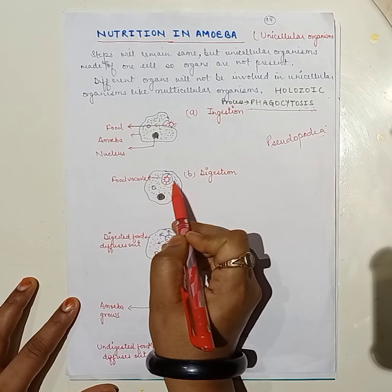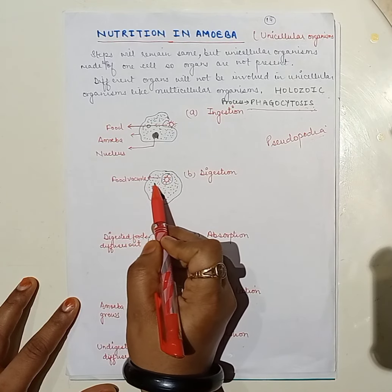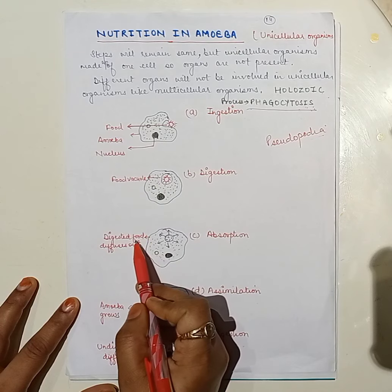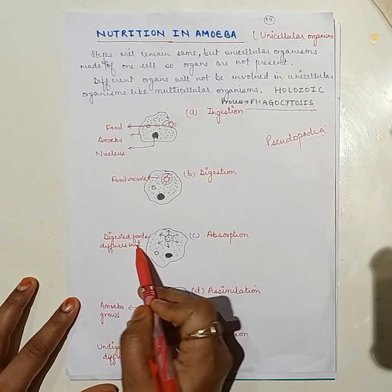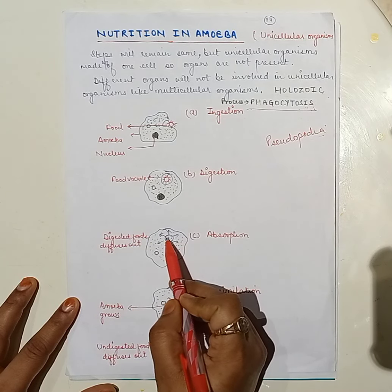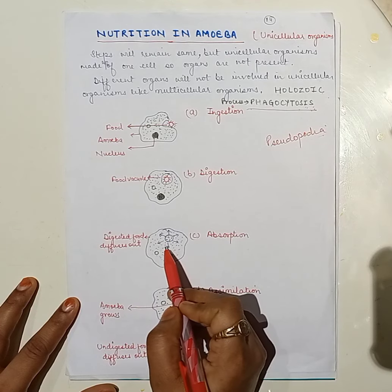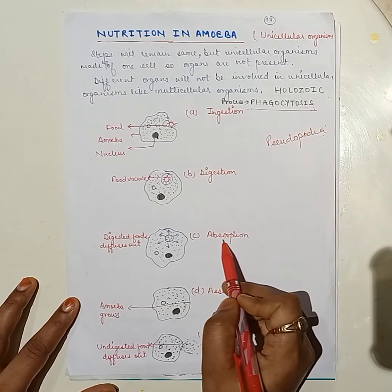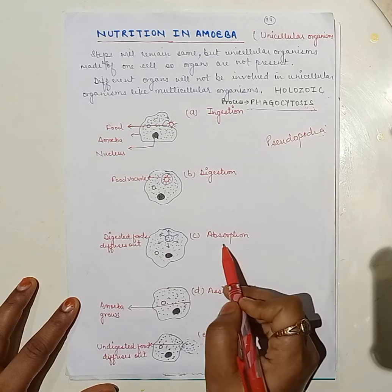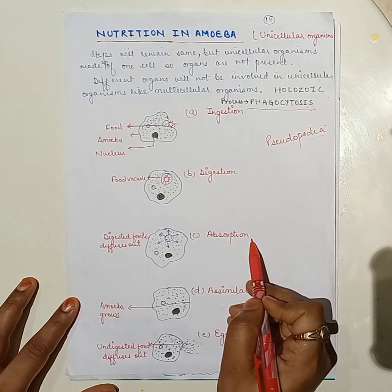Around the food particle, amoeba forms a food vacuole. Inside the food vacuole, digestion of the food material takes place. Then, by the process called diffusion, absorption of the food material takes place through the body surface.